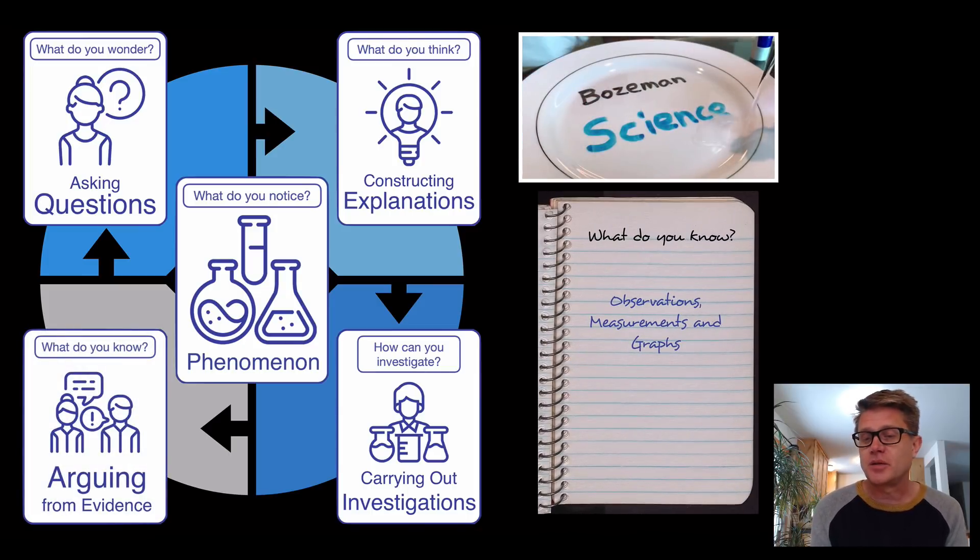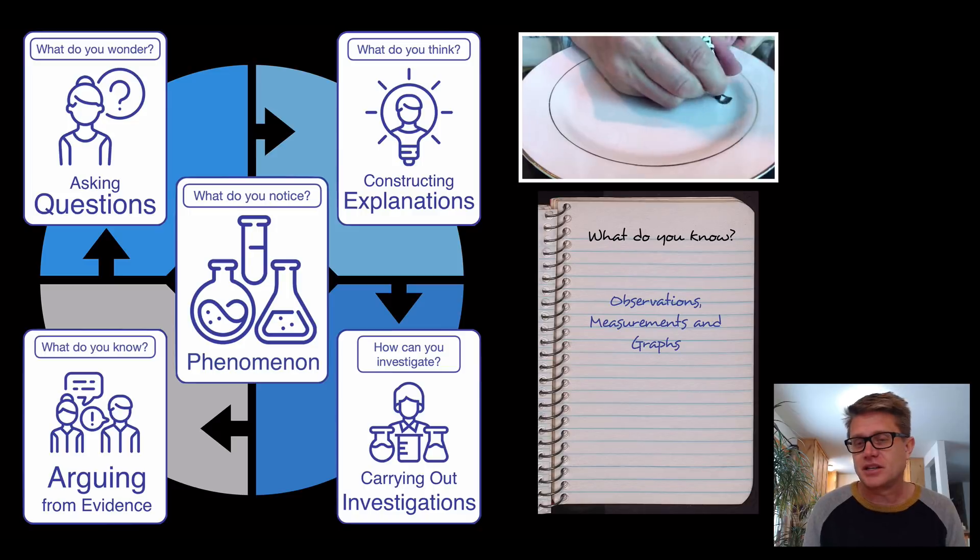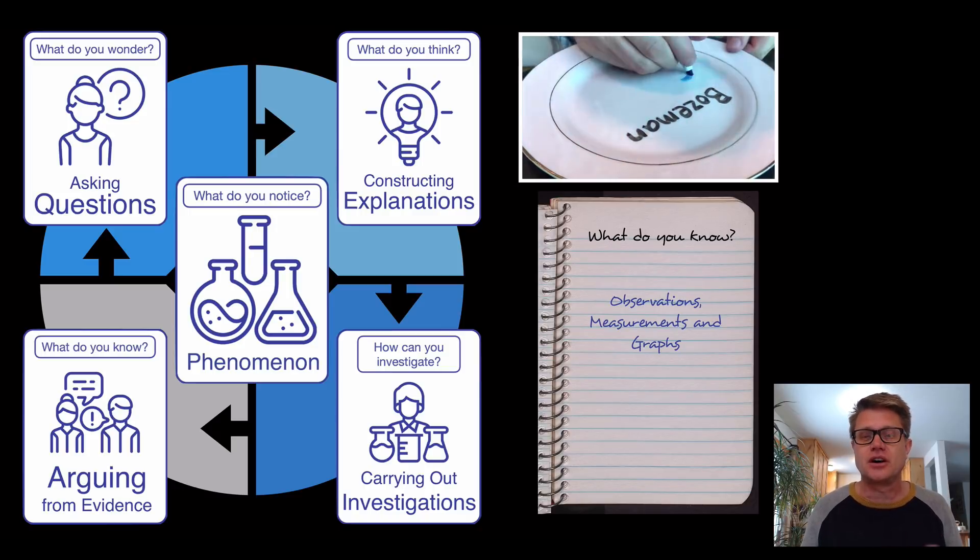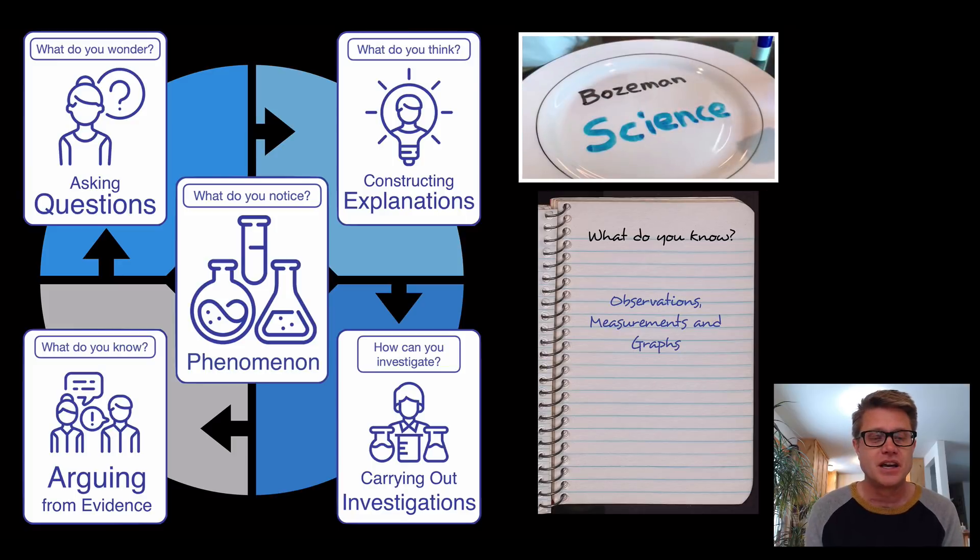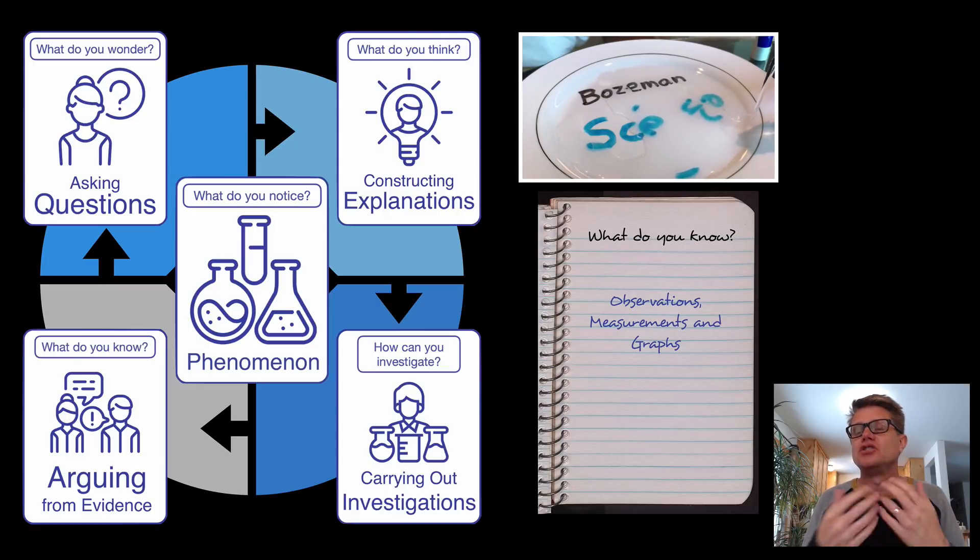Next thing they are going to do is argue from evidence. What does that mean? It is just basically gathering a bunch of evidence so you can tell me what I know. So when you are looking at an explanation that is simply what do you think, or we used to call that your hypothesis or your explanatory hypothesis. But now once you are actually gathering a bunch of evidence, observations, measurements, graphs, now you actually know something. You have learned something about the phenomena.